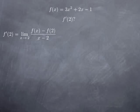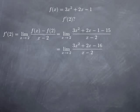If we substitute for f of x and f of 2 their values, 3x squared plus 2x minus 1 is what stands for f of x, and 15 is what we obtain by plugging x equal to 2 in the function — in other words, this is f of 2. After simplification we obtain that f prime of 2 is the limit at 2 of 3x squared plus 2x minus 16 over x minus 2. We should expect that if we plug x equal to 2 we get 0 at the top and 0 at the bottom.